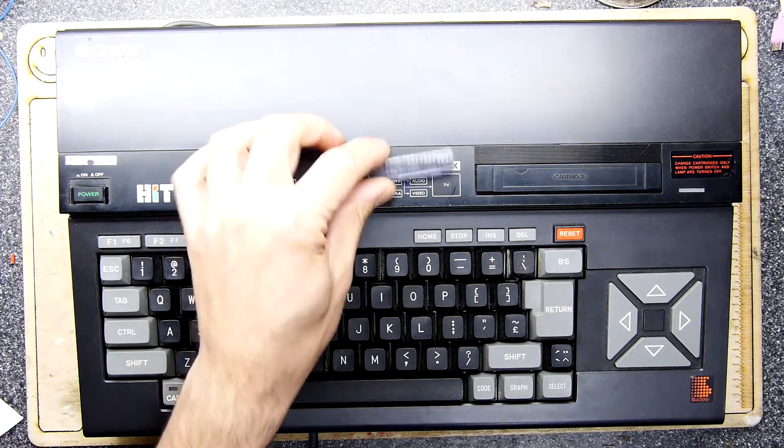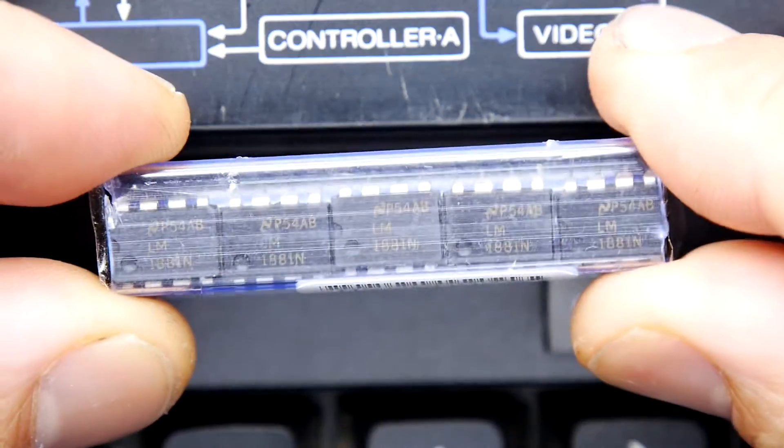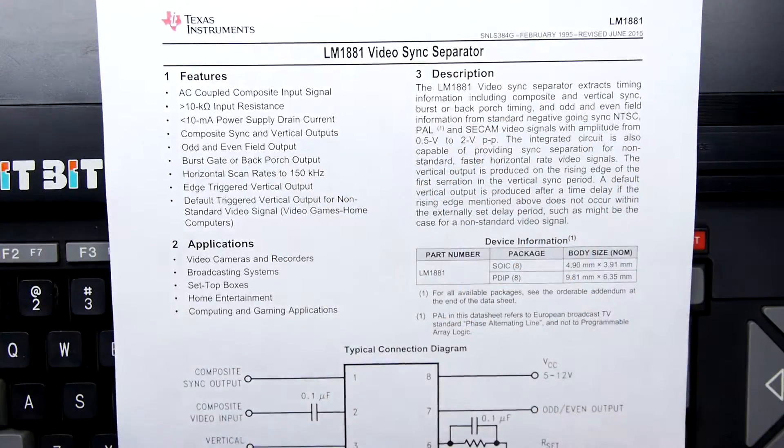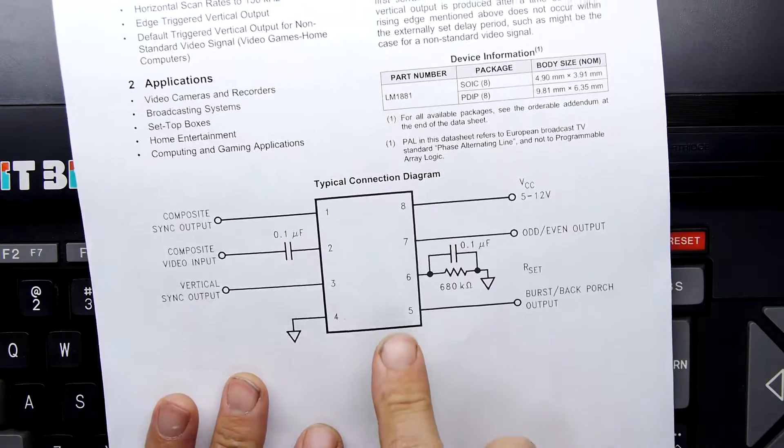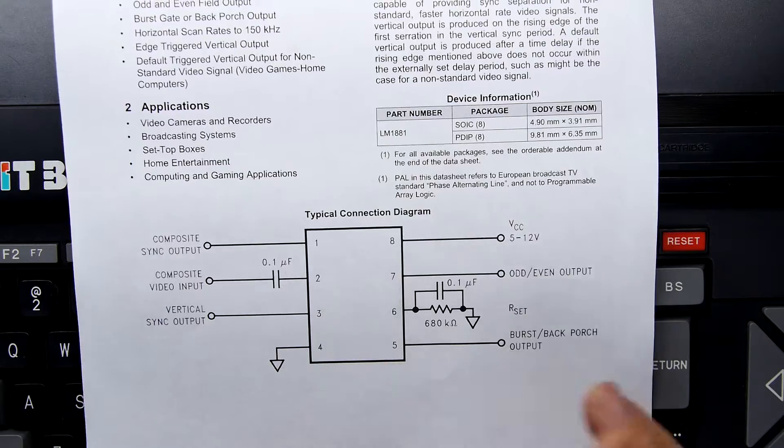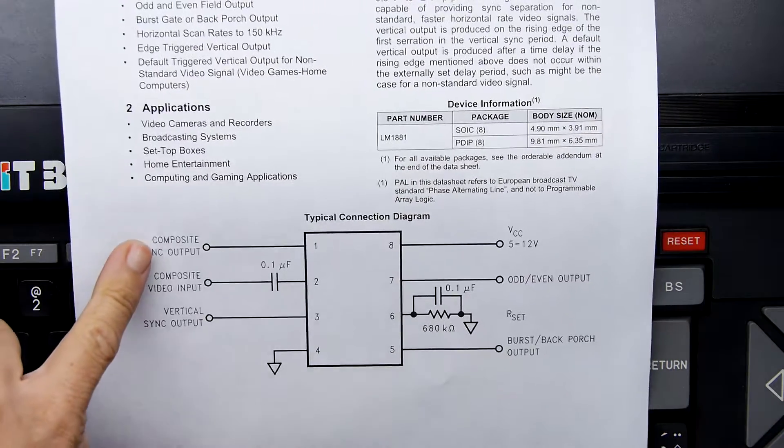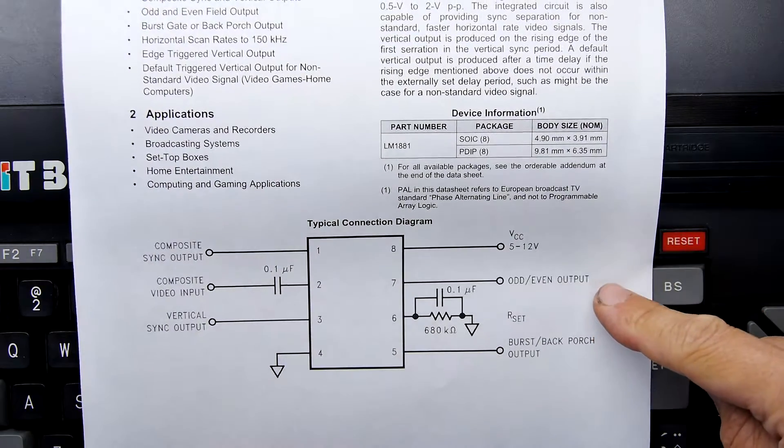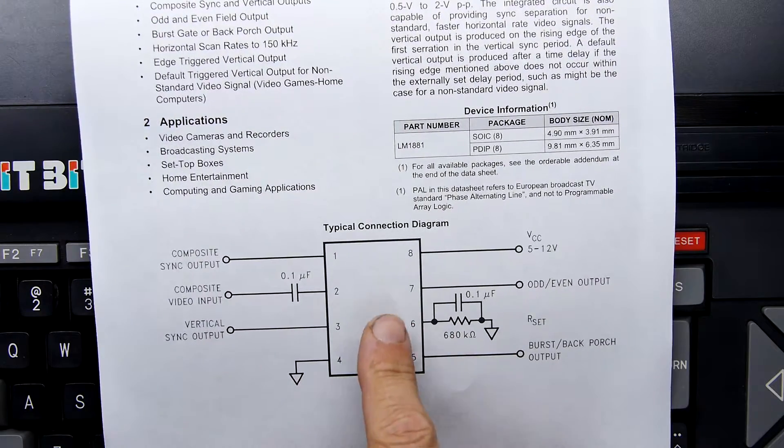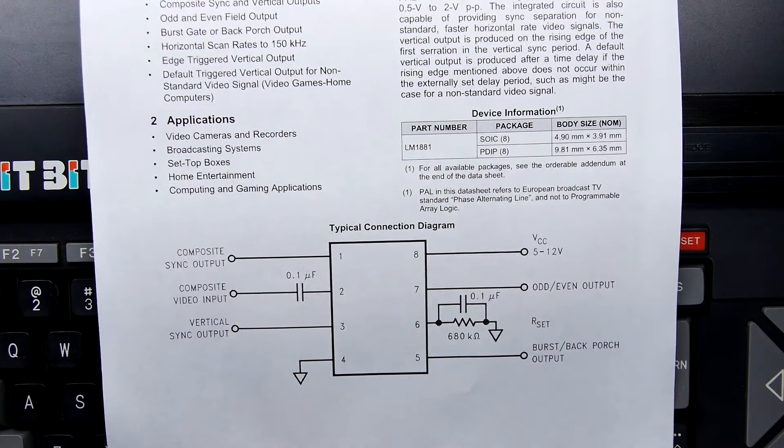So my solution was to use these little tiny guys - the LM1881 video sync separator. If you want to see the data sheet, it's right here. It basically takes a composite input signal and splits it into all the different types: composite sync out, vertical sync out, odd even out, and burst/back porch output. It's a real fantastical little chip.